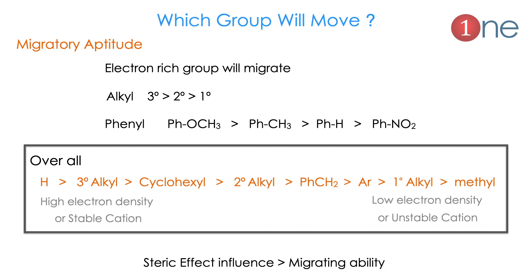Which group will migrate is very important — this is called migratory aptitude. Normally, electron-rich groups migrate. The order is: tertiary alkyl > secondary > primary > phenyl. Electron-donating groups on phenyl make it migrate better; electron-withdrawing groups make it least favorable. Overall, hydrogen has very high migratory aptitude while methyl is the least. High electron density groups migrate first; low electron density groups migrate last. Steric effects also influence migration and can override migratory aptitude.